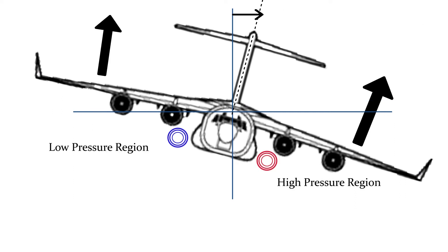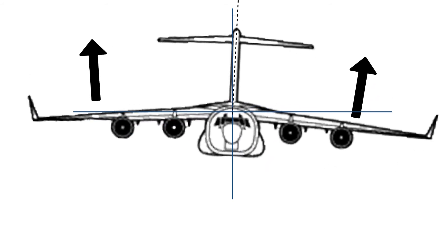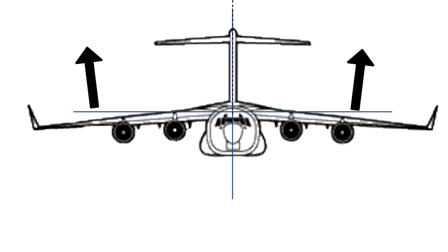It was found that the lower wing develops a high-pressure region under the wing, and the higher wing had a lower-pressure region under its wing. The high-pressure region under the lower wing causes that wing to generate a greater lifting force than the higher wing, thus causing the aircraft to return to level flight without any inputs from the pilot.